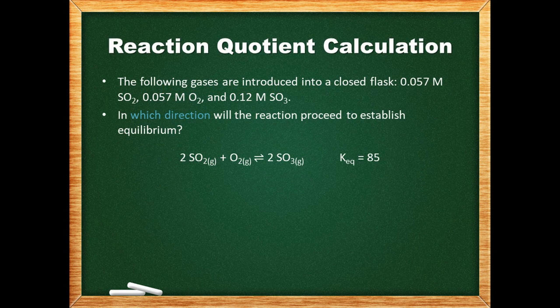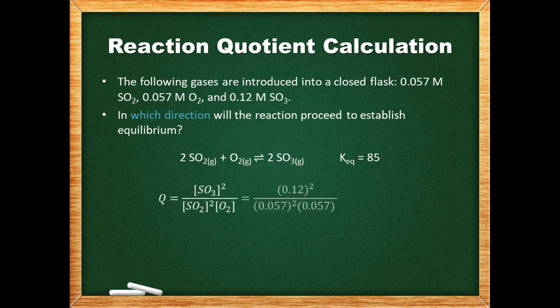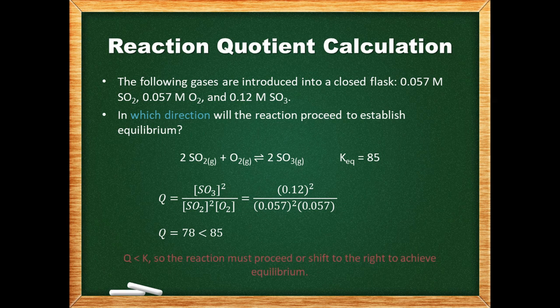In this question we have three gases introduced in a closed flask. We need to figure out which direction the reaction will proceed to reach equilibrium. Unlike the previous problem where we were finding the equilibrium constant, we are not being provided with the equilibrium concentrations — these are the initial concentrations. To find the reaction quotient or trial K_eq, we write down the equilibrium expression and then plug in the initial concentrations. We get a reaction quotient equal to 78, which is less than the equilibrium constant. The reaction quotient is too small so the reaction must make more products; it will shift right to achieve equilibrium.